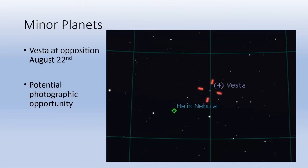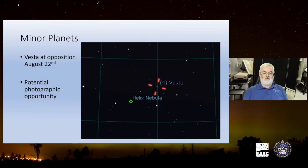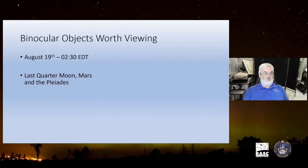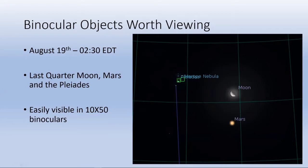Let's take a look at some potential binocular objects that would be worth observing this month. So I would say to you, August 19th of course last quarter of the moon and the Mars and Pleiades all in the same field of view roughly, easily visible in 10 by 50 binoculars. So you'll have this setup right here and that will be a nice close clustering, as long as you don't mind doing it at 02:30 in the morning.